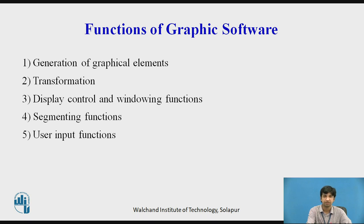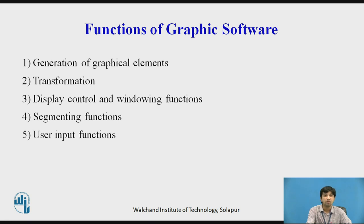The second function is transformation. It mainly consists of editing or changing the given geometrical element, drawing, or image displayed on the screen. 3D transformation is mainly used for geometrical elements so that they can construct or develop an application model. This transformation mainly consists of enlargement or reduction of an element — that is scaling — and repositioning of the image — that is translation.